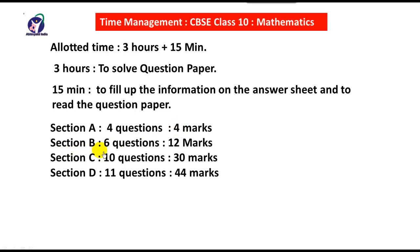Section B has 6 questions for 12 marks — each question is 2 marks. Section C has 10 questions for 30 marks — each question is 3 marks. And Section D has 11 questions for 44 marks — each question is 4 marks.